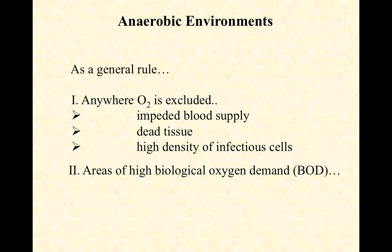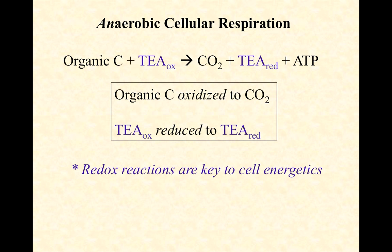As a general rule, anywhere that oxygen is excluded will be an anaerobic microbial habitat. Blood supply can be impeded by dead (necrotic) tissue, a tourniquet, poor blood flow due to disease such as diabetes, or a high density of infectious microorganisms consuming oxygen and making the habitat very anaerobic. Any place with a high biochemical oxygen demand (BOD) — where there's a lot of organic matter — causes demand for oxygen by aerobic respirers, leaving the environment anoxic for anaerobes to kick in.